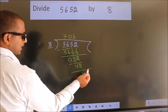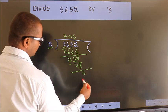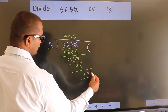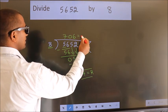No more numbers to bring it down. So we stop here. This is our remainder. This is our quotient.